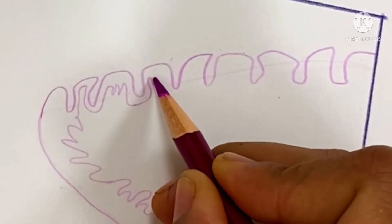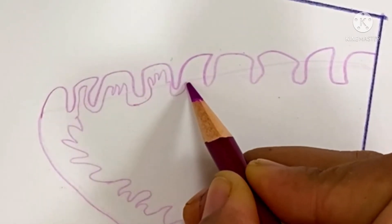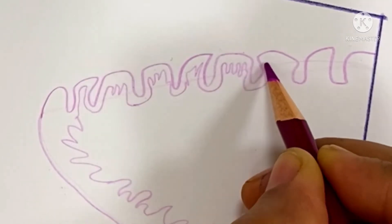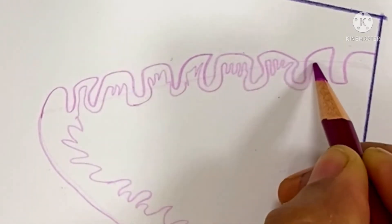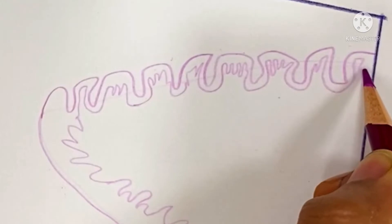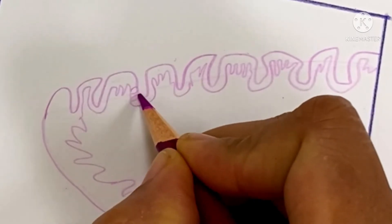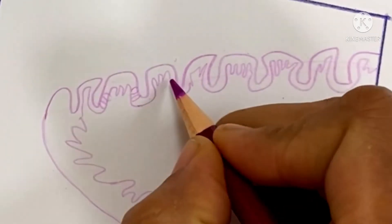The epithelium of the mucosa is stratified squamous epithelium. Deep connective tissue below the epithelium projects into the epithelium, giving a wavy appearance.